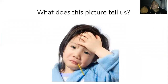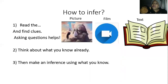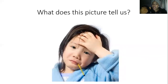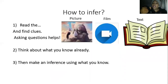Let's use our inference skills to work out what's going on in this picture. The first thing we need to do is read the picture. Yes, we can read something even though there are no words. We can work out what is happening by looking at the clues. Asking questions can help you when looking at a picture — you might want to say: why is the girl looking like this? Why is her hand on her head? Why is she in pyjamas? All of those things will help us work out what we already know and infer what's happening.